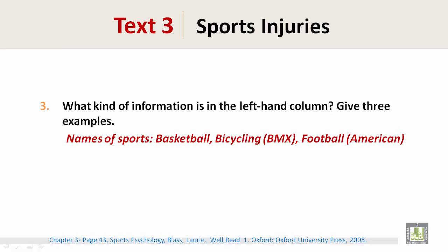Question 3: What kind of information is in the left-hand column? Give three examples. Those are the names of the sports, such as basketball, bicycling — also known as BMX — and football. This is American football.